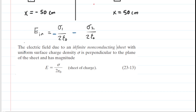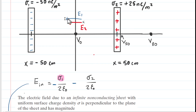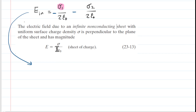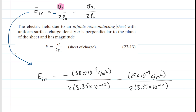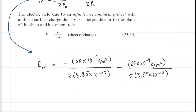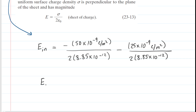Now we plug in the surface charge densities. Note that sigma one is technically negative, but we've already accounted for direction by pointing the field to the left, so we plug in the magnitude. The surface charge densities are converted from nanocoulombs per meter squared by multiplying by 10 to the minus 9. The electric field between the plates turns out to have a value of approximately negative 42,370 newtons per coulomb.